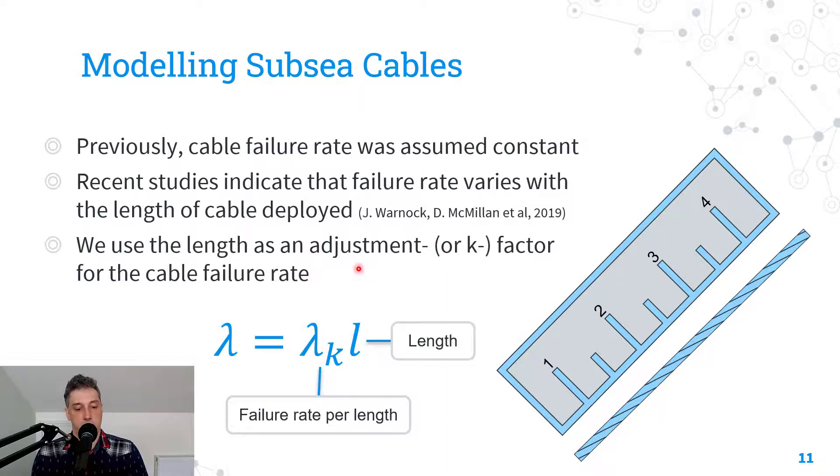It produces a very simple formula. The length here we have L, we have the failure rate per length lambda k, which is from this paper, and then we combine those to give a final failure rate for the cable component.